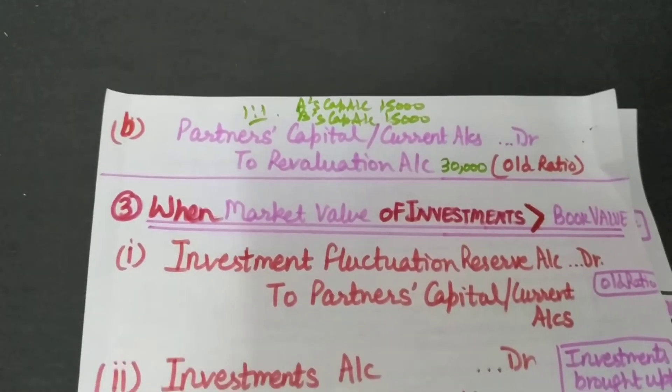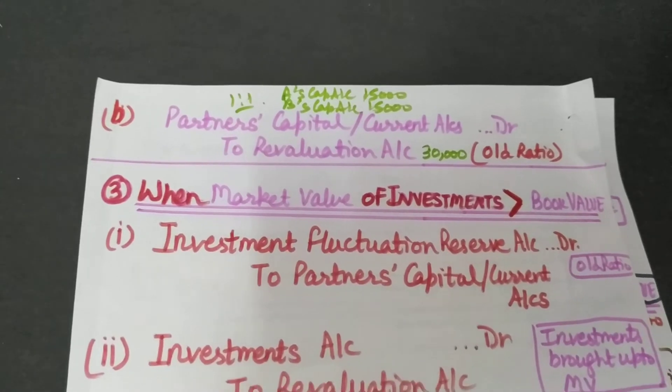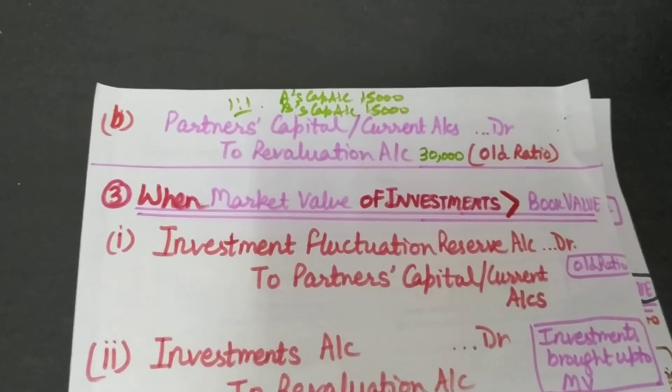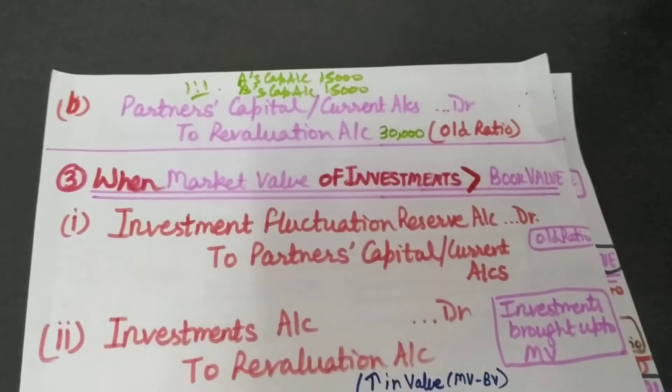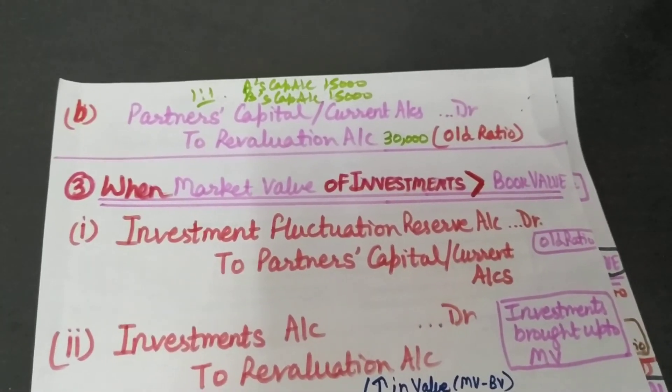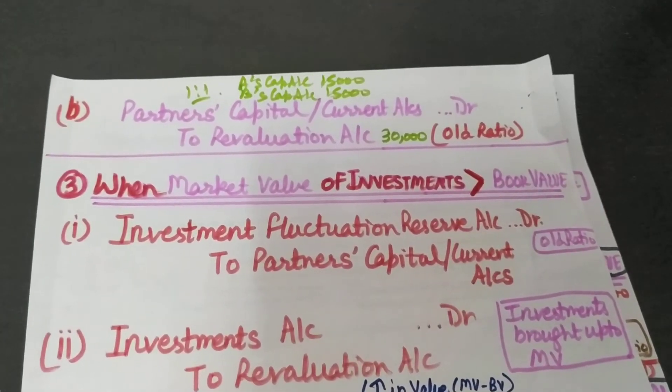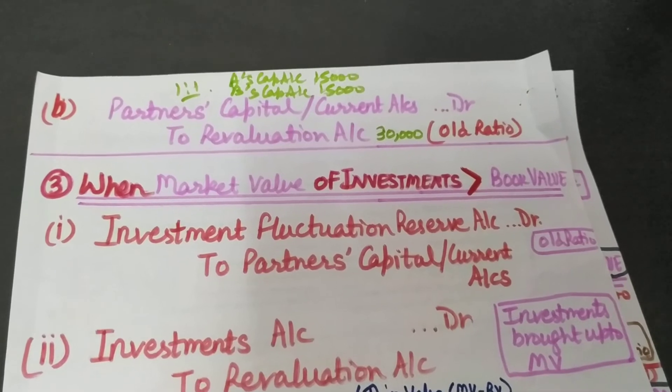Both these entries are passed together in this case where the fall exceeds the Investment Fluctuation Reserve.